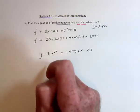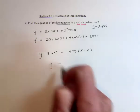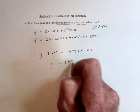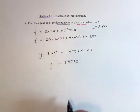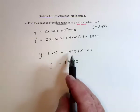And then we need to do some algebra to clean it up, so that we've got y equals 1.973 times x. So distribute this.